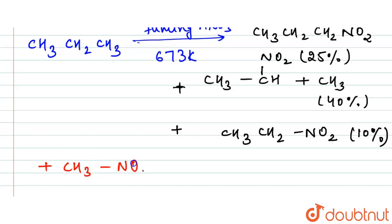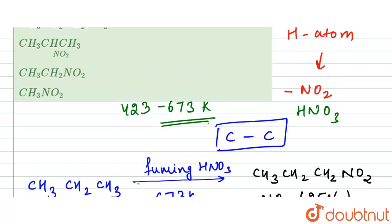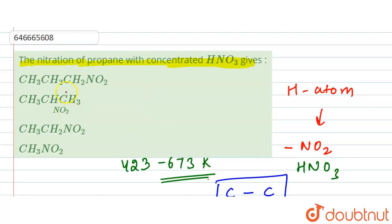Now let's verify the products. CH3CH2NO2 - yes, it is formed. CH3-CH(NO2)-CH3 - yes, this is also formed, 40%. All of these products are formed.